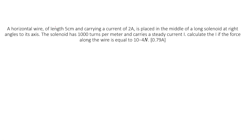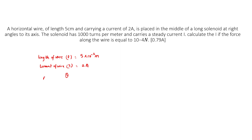Given: length of wire = 5 × 10⁻² meter. Current of wire = 2 Ampere. The wire is placed in the magnetic field of a long solenoid at right angles to the axis, so theta = 90 degrees.